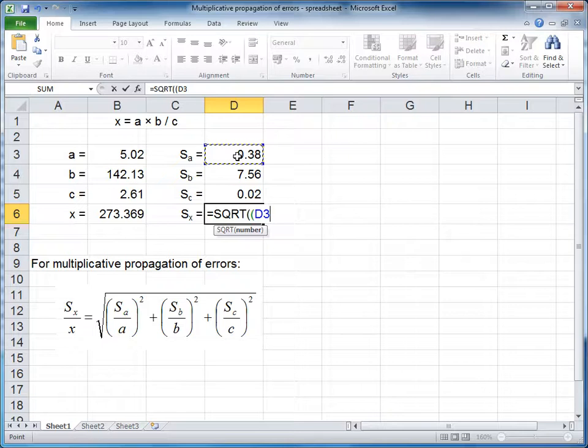Highlight the error in A, divided by the magnitude of A, close brackets, raise to the power of 2 to square it.